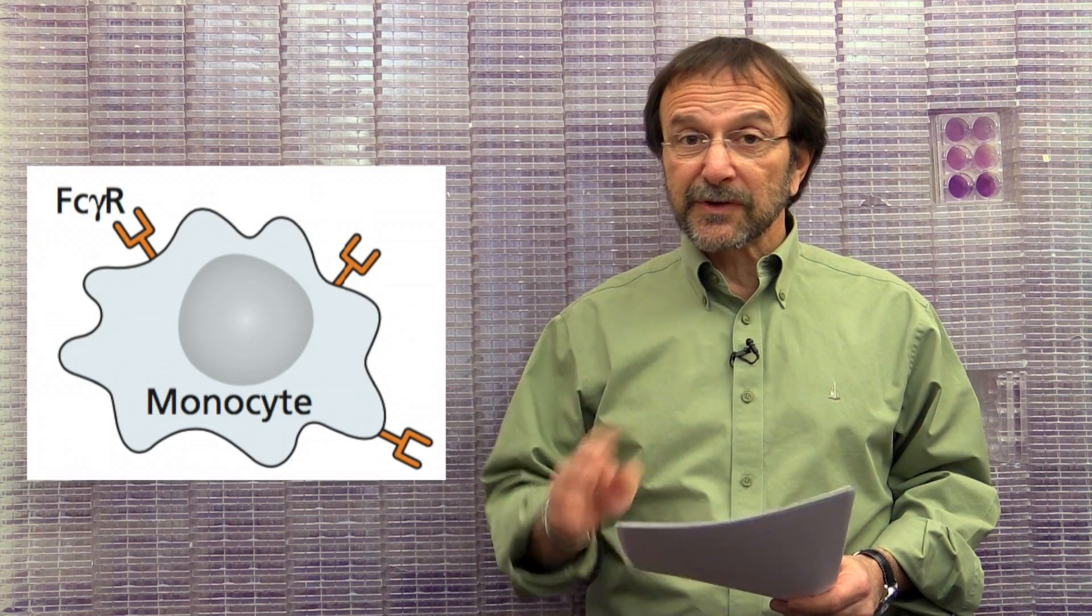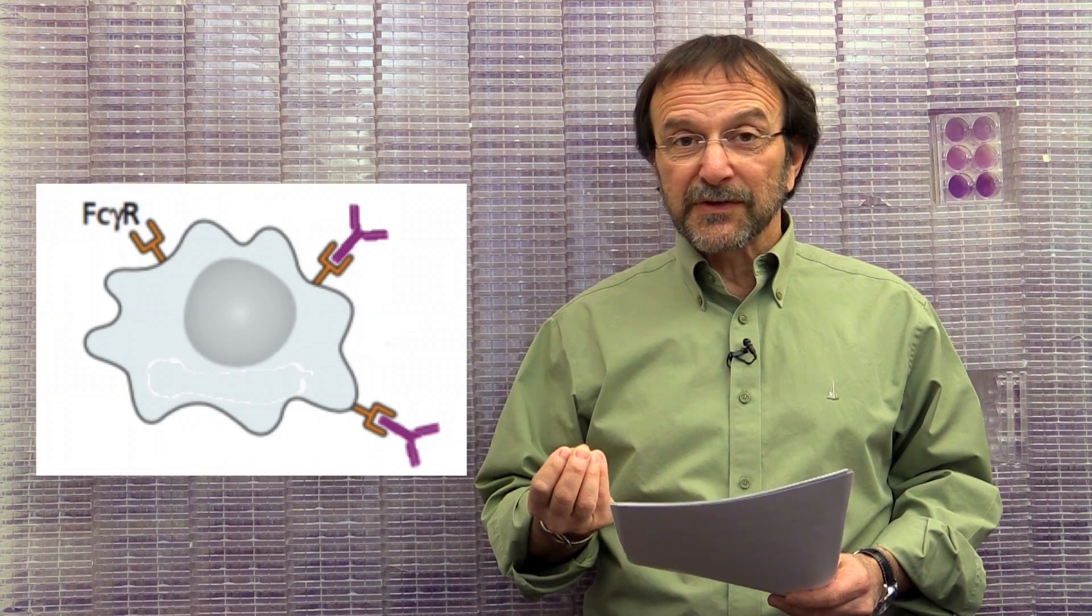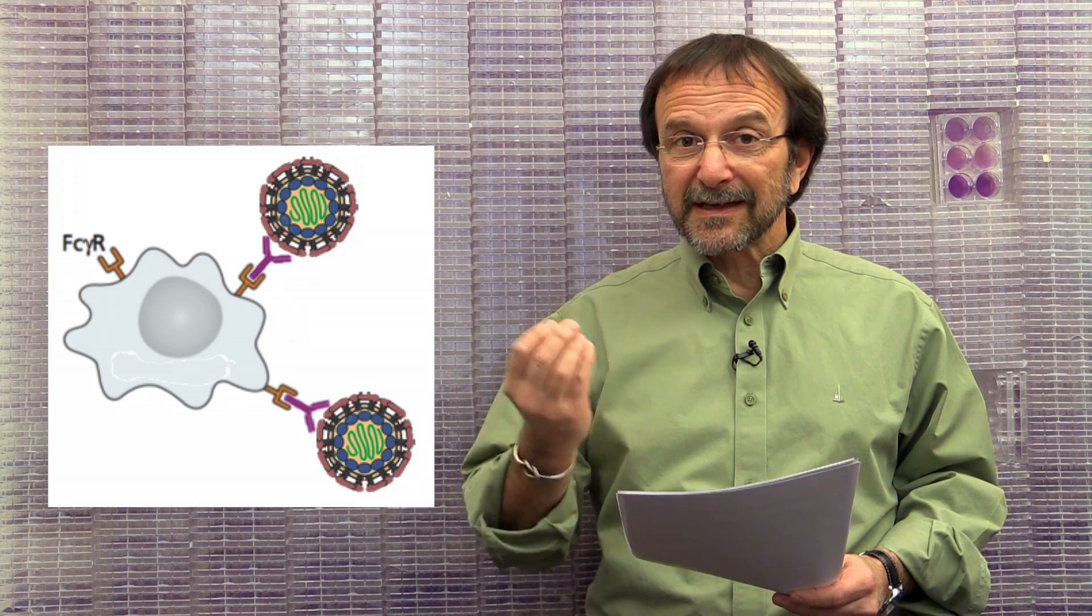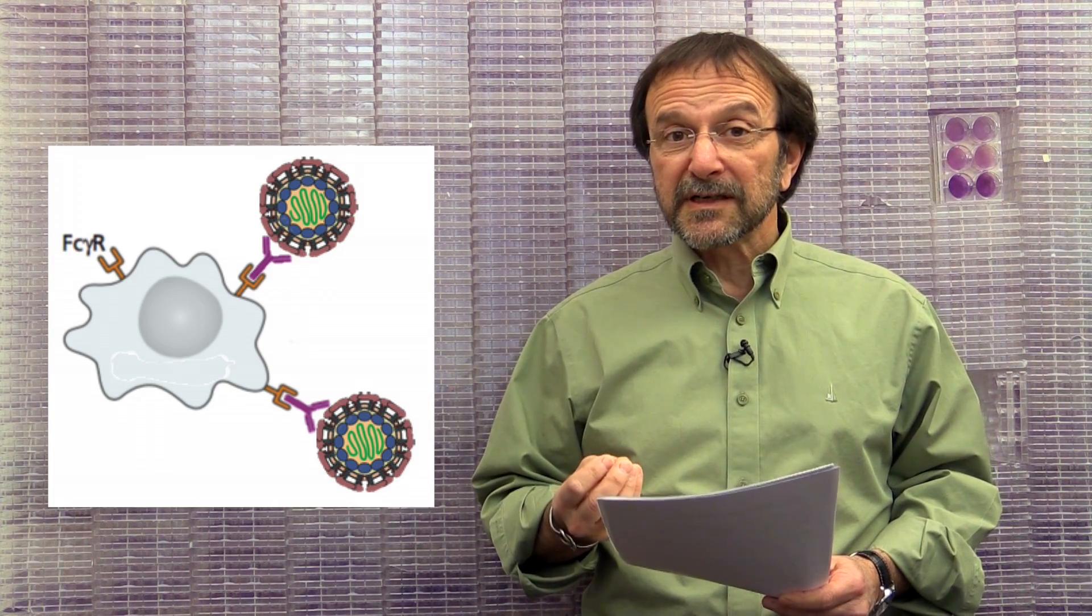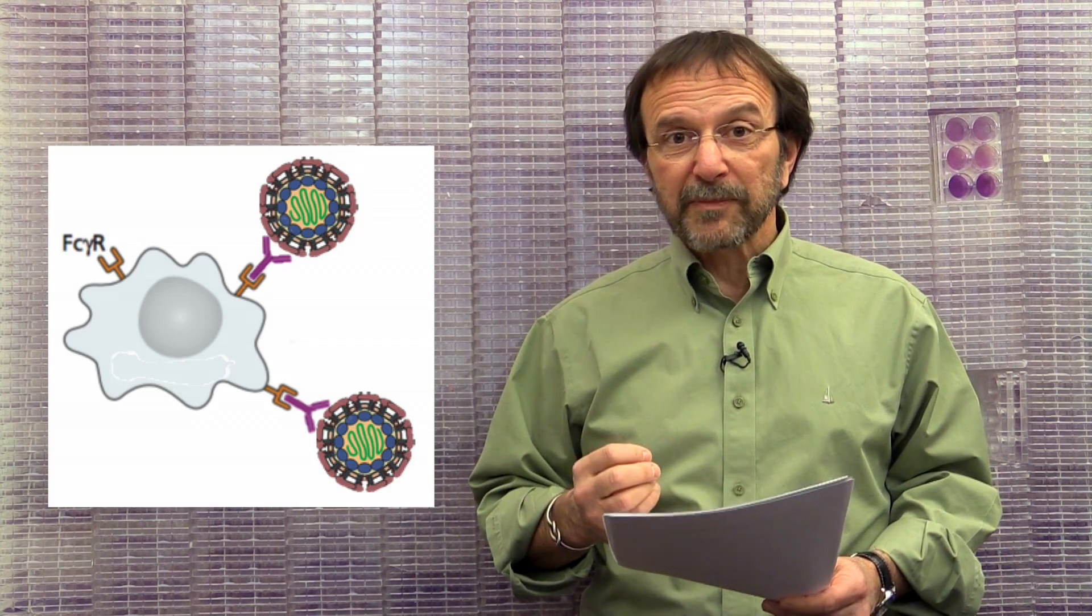FC receptors are on the surface of certain kinds of cells, and they bind the FC portion of antibodies. So if you can imagine, Zika virus is bound to the dengue virus antibody. The antibody, in turn, is bound to a cell surface receptor. It's taken up into a cell, and it can replicate. The authors found that in cultured cells with two monoclonal antibodies.